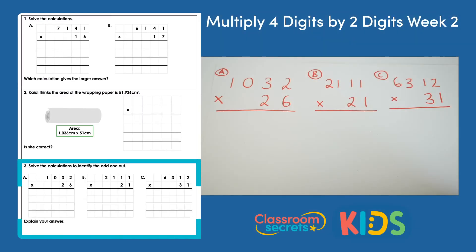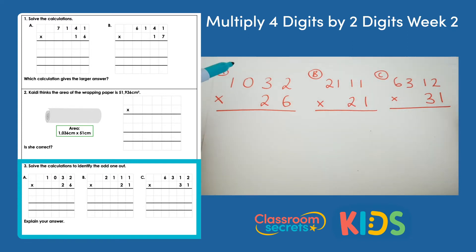The final question says solve the calculations to identify the odd one out. Explain your answer. So the first thing we need to do is answer all of the calculations. Let's work through them all together.